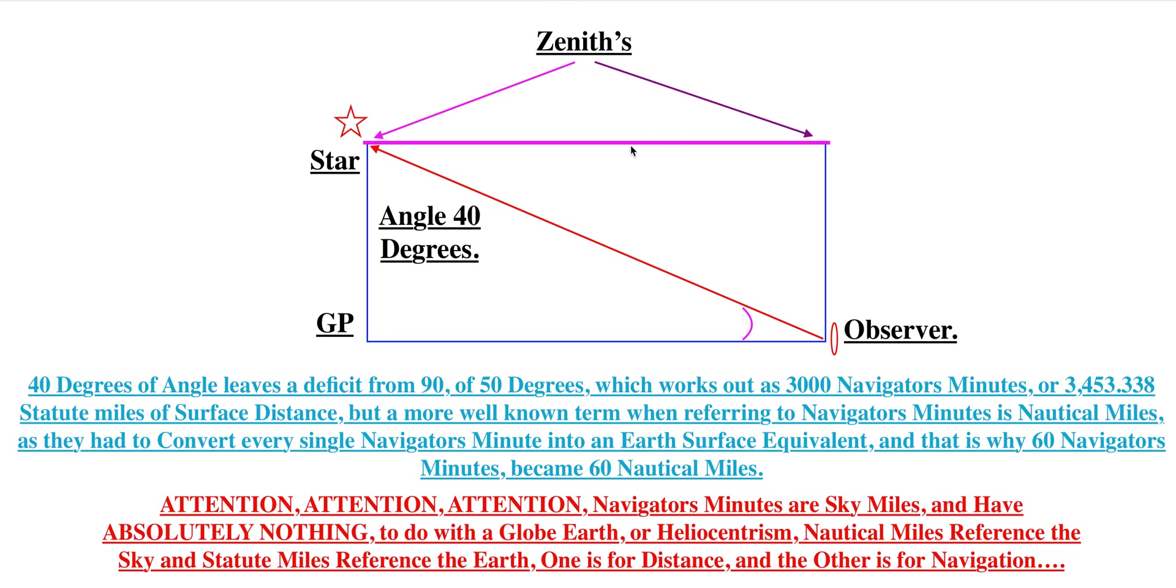Okay, so this is how it works. See this purple line here? This is the 3,000 navigator's minutes, or 3,453 statute miles, in a straight line distance. But because it's in the sky, it's not a mile. It's not a statute mile.